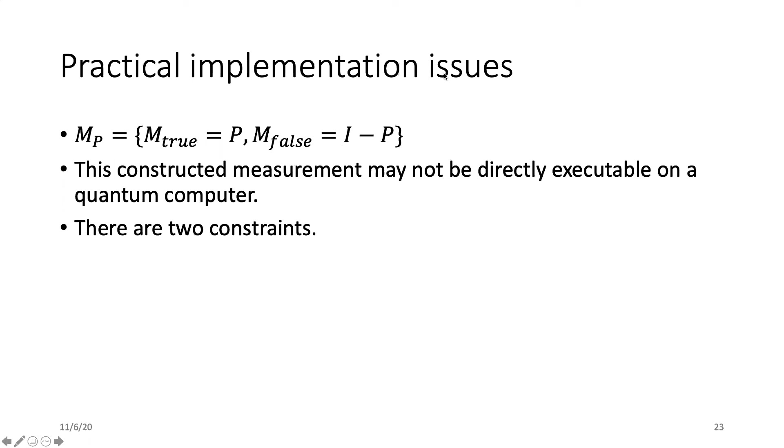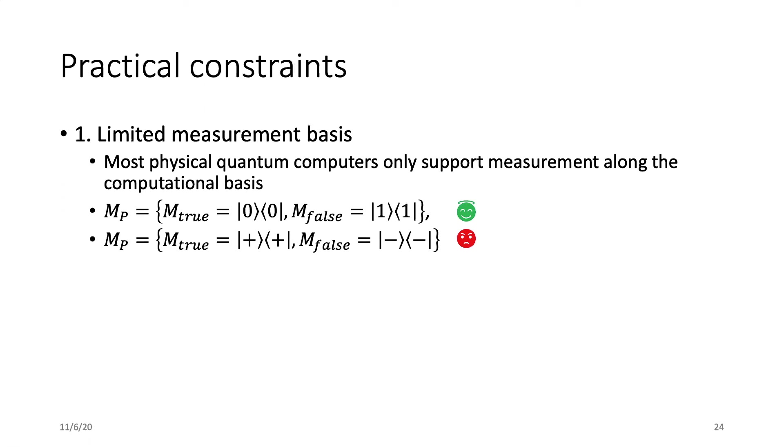Before was the theoretical part of the projection-based assertion, and now let's discuss the practical implementation issues. That is, the projective measurement constructed based on a projection P may not always be executable on a quantum computer. And there are two main constraints. The first constraint is the limited measurement basis. Most quantum computers only support measurement along the computational basis. If Mp is |0⟩⟨0|, for example, and Mfalse is |1⟩⟨1|, then this measurement is executable. But when the measurement basis is in, for example, the X basis, this projective measurement cannot be directly implemented.